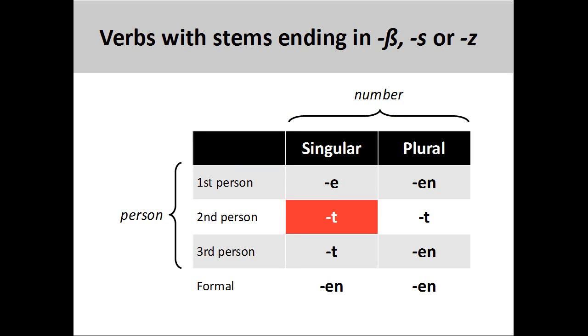Finally, a few regular verbs have a stem ending in '-ß', '-s', or '-z', which requires another slight variation to the conjugation pattern. The second person singular ending drops the 's' from the regular '-st' ending. This exceptional ending is marked in red on the screen.